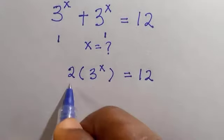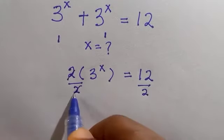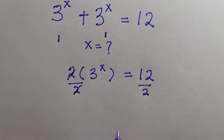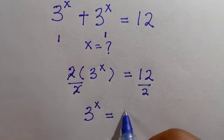The next thing to do is divide by 2 so that only 3 raised to power x remains. So 2 cancels 2 and here becomes 3 to the power x equals 6.